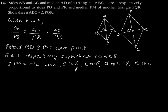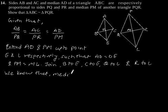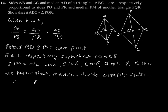Now we know that a median divides the opposite side. Therefore, BD is equal to DC, and QM is equal to MR.